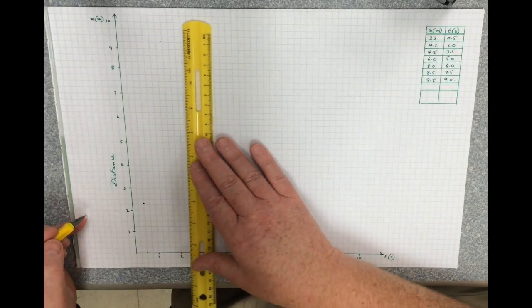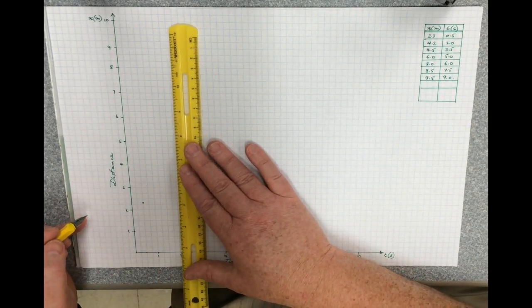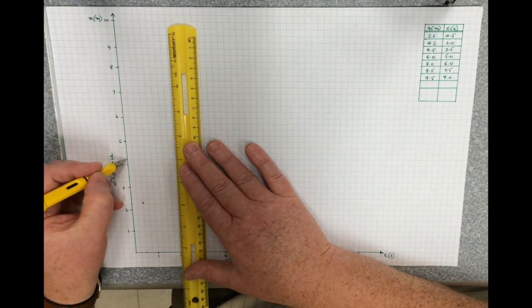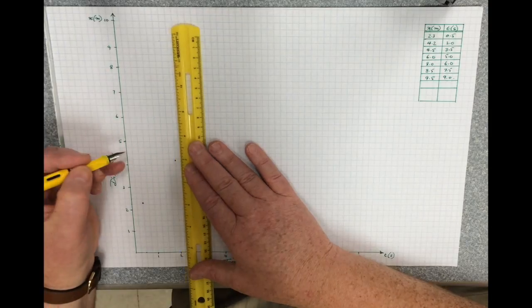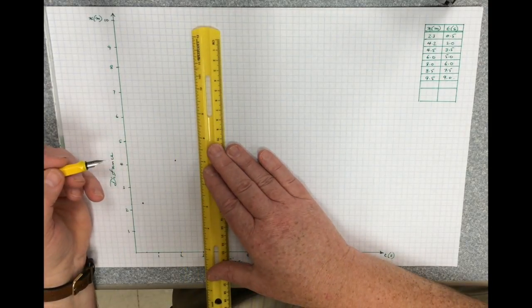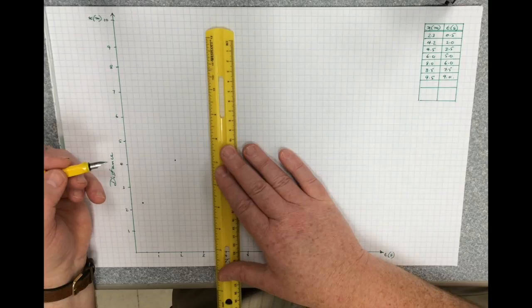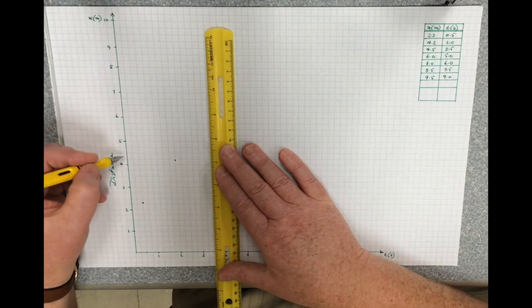Next one is at 2 seconds and 4.2. Move it over to 2 seconds. This is 4.25, just a little bit below it. Next one is at 3.5 seconds, 3.5 and 4.5.